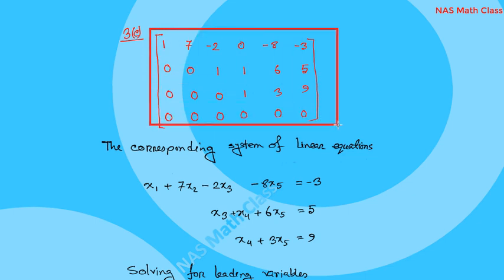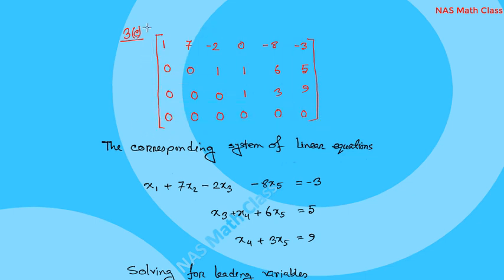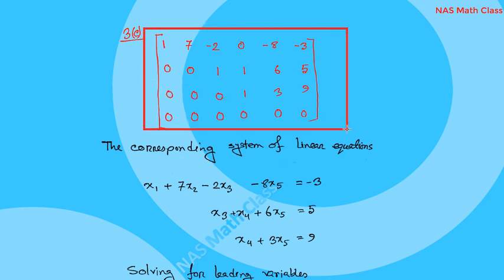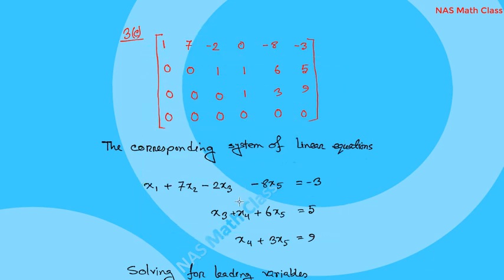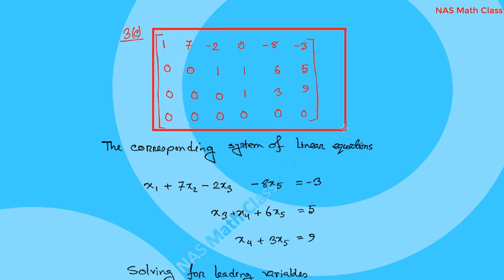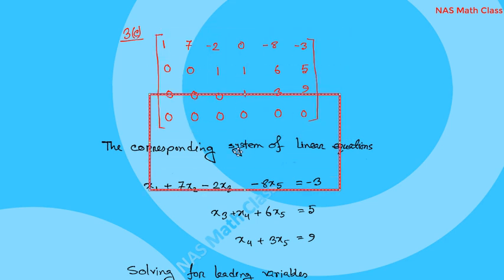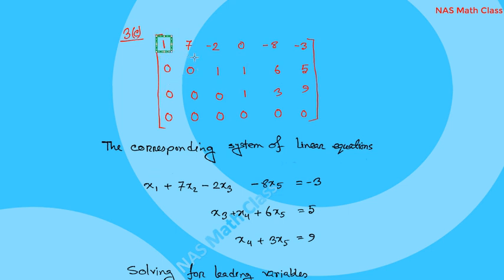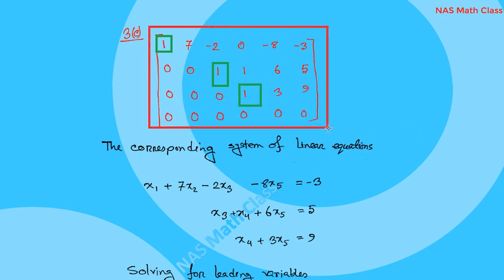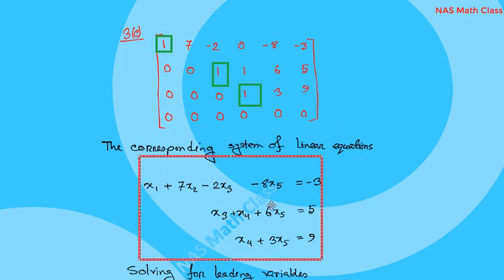This is the augmented matrix. From this augmented matrix we derive the corresponding system of linear equations. The positions with leading ones correspond to leading variables — this is a leading variable, this is a leading variable, this is a leading variable — and we convert to the system of linear equations.